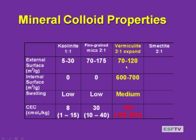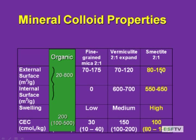Then we talked about the big expansion group — smectite. These are clays that expand wildly, creating large cracks when dry and swelling when wet. These are 2:1, the same as vermiculite, but with quite different expansion. The external surface area is not too different, and the internal surface area is actually slightly lower than vermiculite, yet smectite has high swelling. Interestingly, smectite has a lower CEC than vermiculite despite greater expansion — and this has to do with isomorphous substitution.